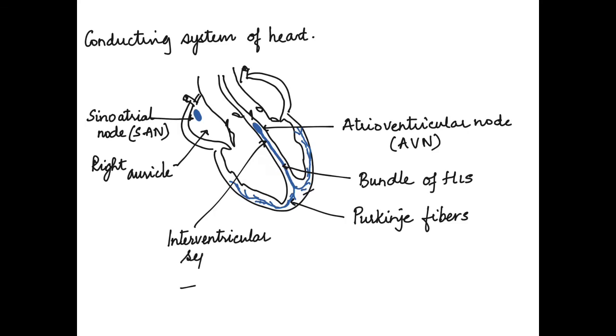The impulses from AVN pass through the bundle of His to the Purkinje fibers, which help in the contraction of the ventricles. This way the conducting system works by moving from SAN to AVN to bundle of His and Purkinje fibers.